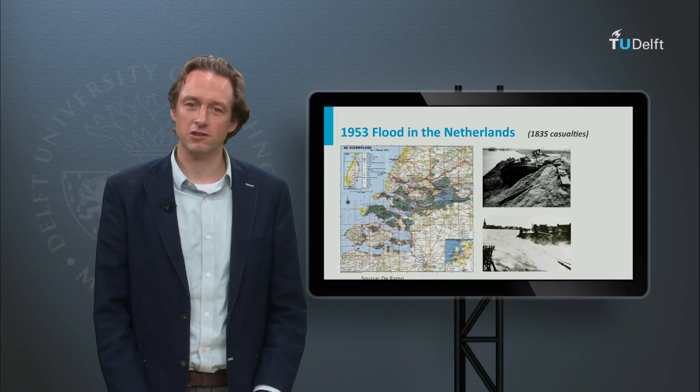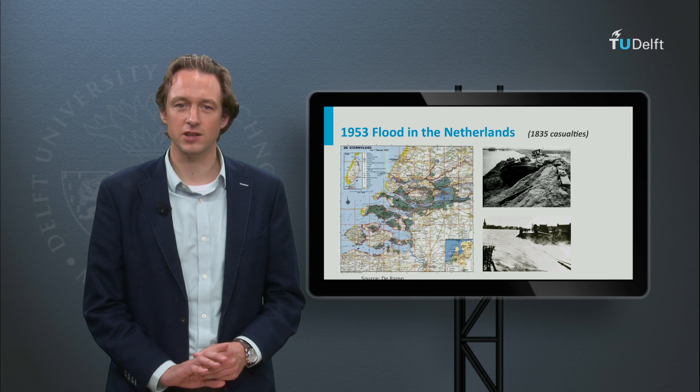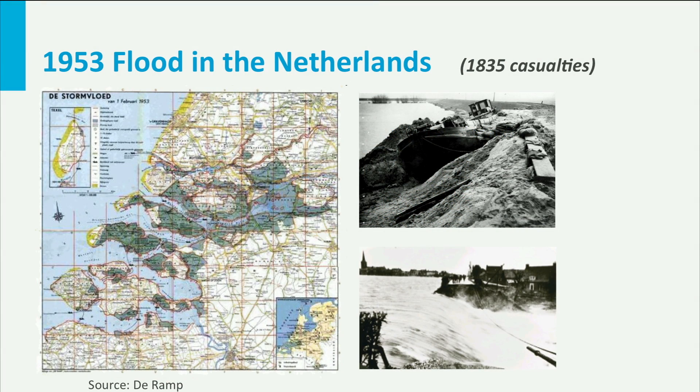If emergency measures prove to be unsuccessful, a breach is formed in a dike and enormous amounts of water will start to flow in. At this moment it will be almost impossible to stop the flood. However, miracles are sometimes possible. During the North Sea storm surge in 1953 in the Netherlands, a starting dike breach that threatened South Holland was miraculously stopped by manoeuvring a ship into the gap of the dike.